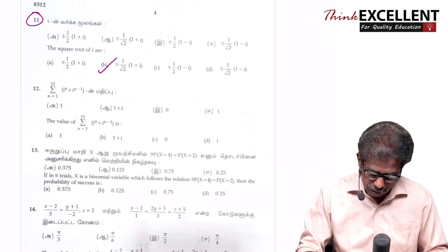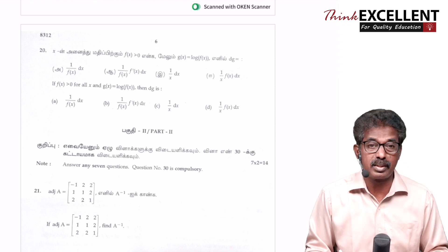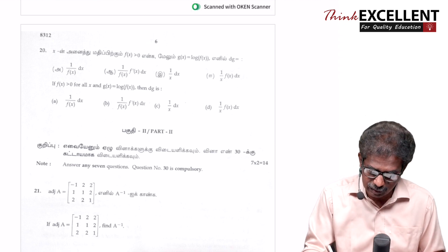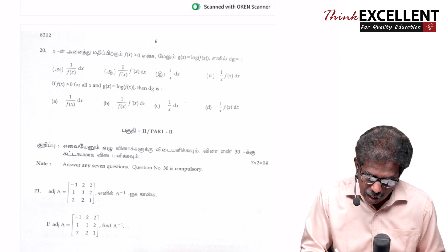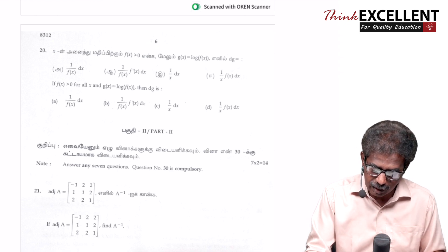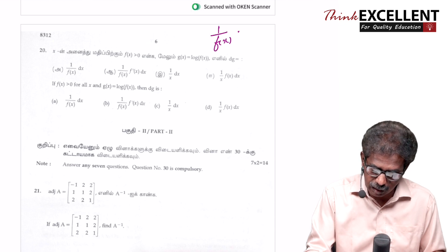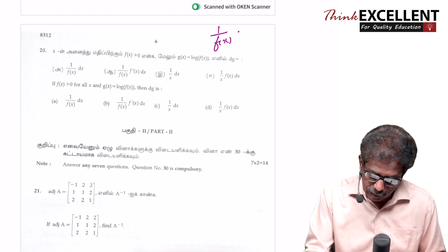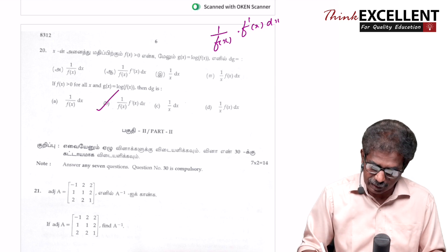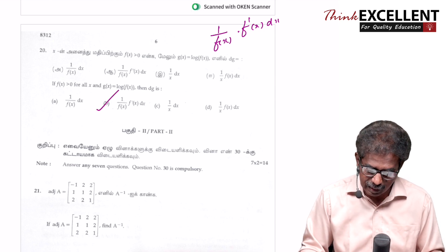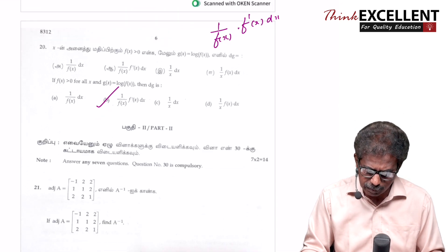Question number 20 is again a created question, but it's a very simple one — one from our discussion classes. Log f(x): differentiate log f(x) into the derivative of x times dx. So B is the correct answer. Section A — all of the questions you can do very easily. There are four created questions, but those are simple questions.